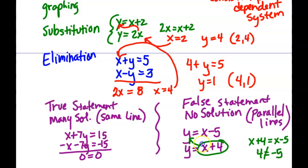You might be able to just look and see they both have a slope of positive 1. If you had to graph those, they both have a slope of positive 1 and different y-intercepts, so they'd be parallel. But you won't always notice that, so I wanted to give you an example.